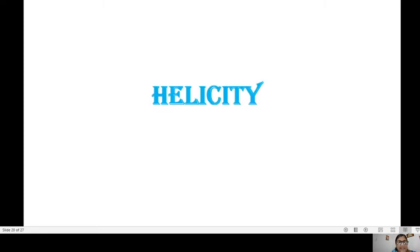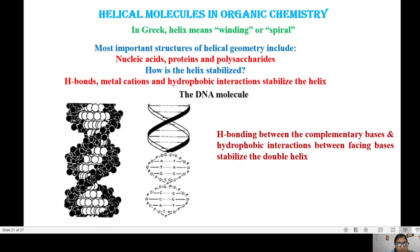Let us now move to helicity. This is another form of chiral motif. The well-known molecule for the helix is DNA. Other than that, nucleic acids, proteins, polysaccharides all have this sort of helical geometry. How is the helix stabilized?